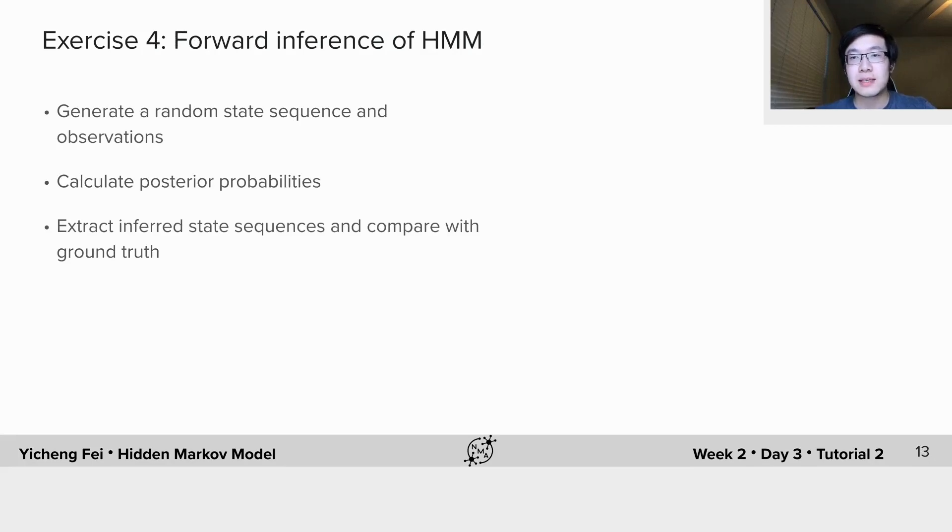Now let's unfreeze the state sequence and see, for a randomly generated state sequence, is forward inference able to recover it from noisy data? In this exercise, you will generate a random state sequence and corresponding measurements as in exercise 1. Then, use the forward inference function you just completed in last exercise to get the posterior probabilities.